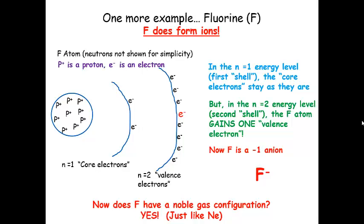Now, just keep in mind, in general, metals lose electrons and form cations. So it's easier for them to go to the previous noble gas configuration, and nonmetals generally gain electrons to form anions.